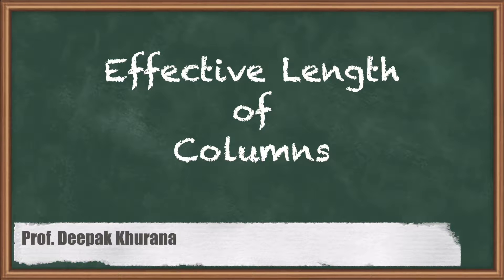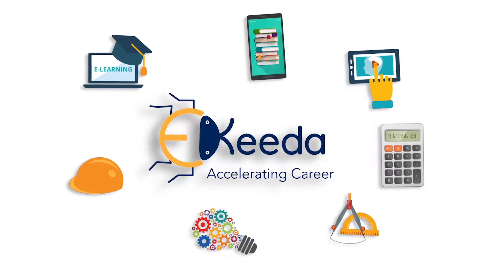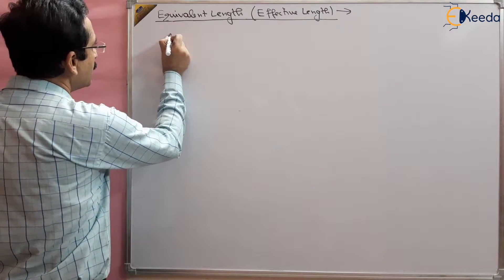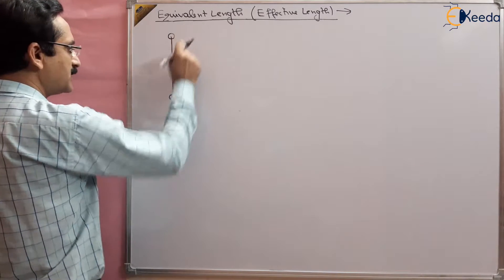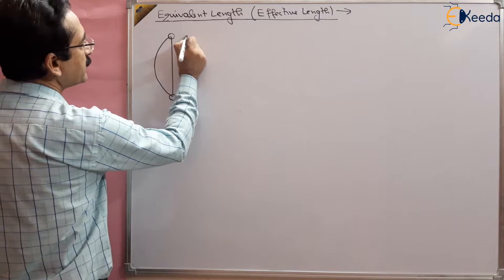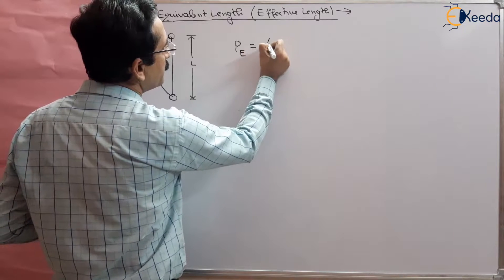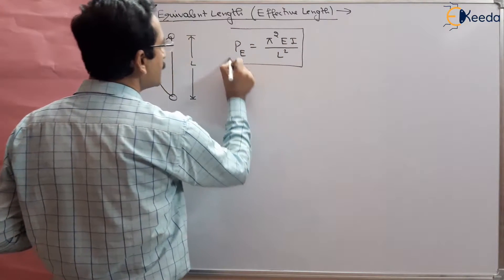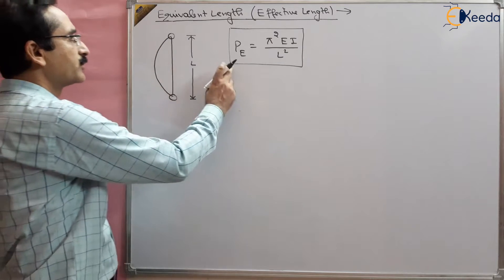In this session we are going to study the effective length of a column. We have already studied in our previous lecture that if we apply a load on a two-hinged column — hinged at both ends — we get this type of deflection over length L, and we got Euler's load equal to π²EI/L². That is the Euler's load when both ends are hinged.